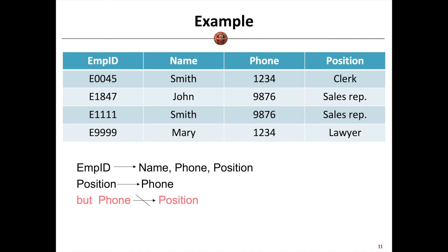Furthermore, from the table we can find another functional dependency. For each position of an employee in the company, they will have a phone number. So we can derive: position implies phone number. However, based on the table, we cannot say phone number implies position, because we can find a counter-example — two tuples agree on the phone number but do not agree on their positions. In other words, phone number implies position does not hold based on this relation.